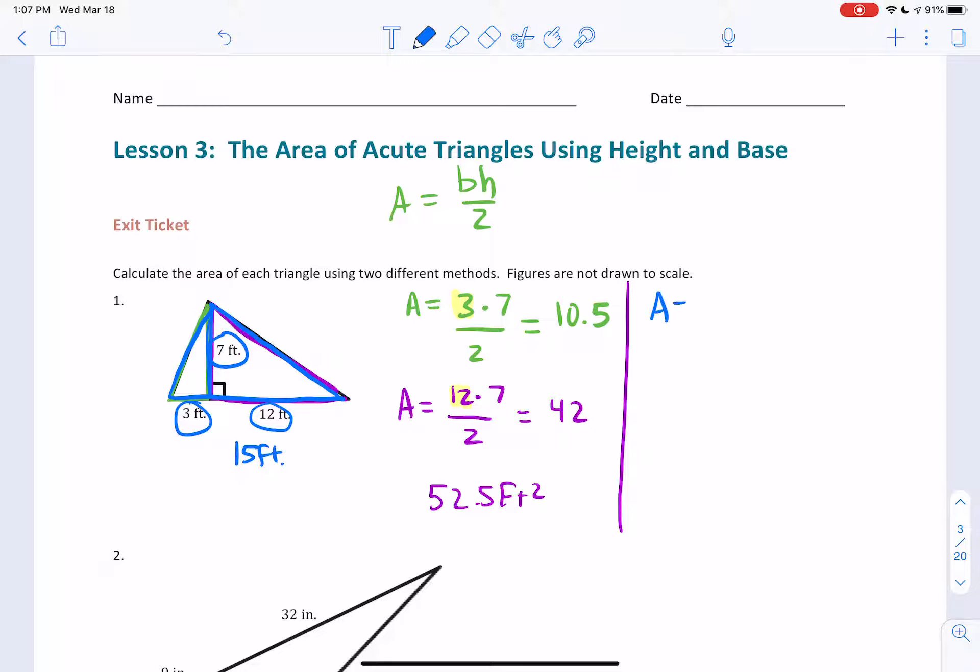So now using the formula, area equals base. Base is 15, height is 7, still dividing by 2. 15 times 7 is 105 divided by 2. And 105 divided by 2 is 52.5. So you get the same answer and there's a little bit less work.